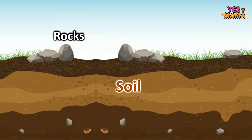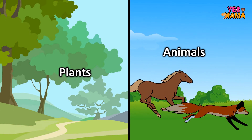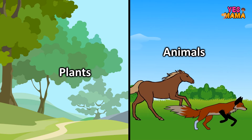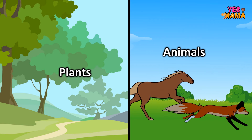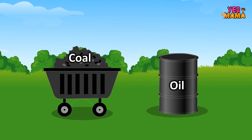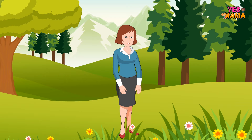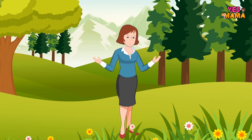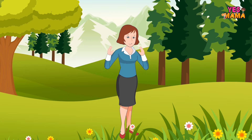Soil and rock, plants and animals, coal and oil. Natural resources are found all over the Earth. Some are found under the surface.